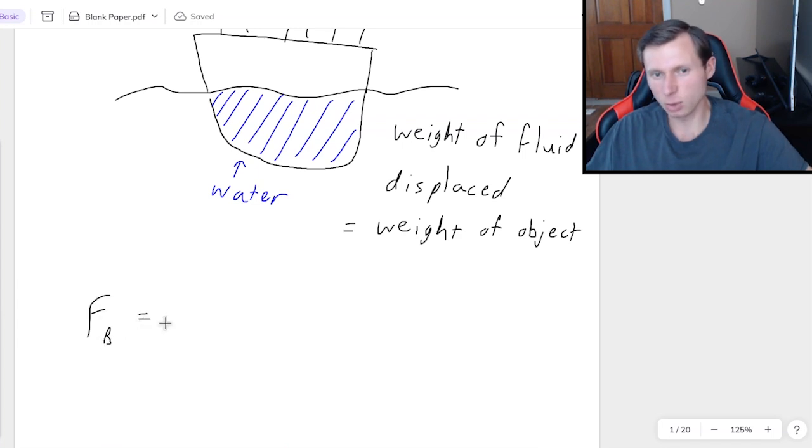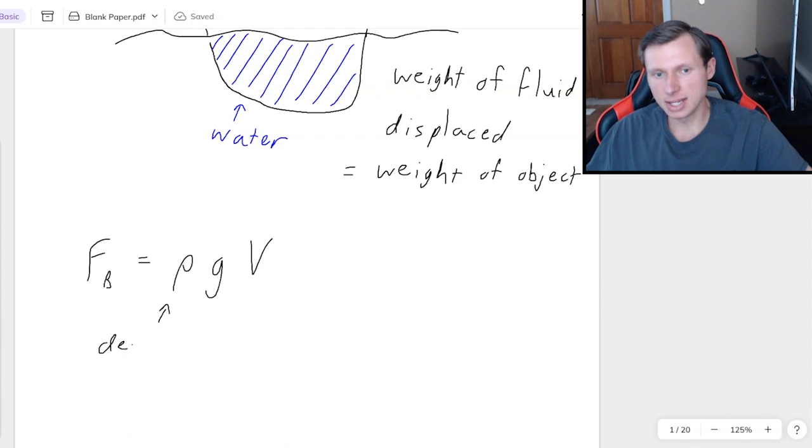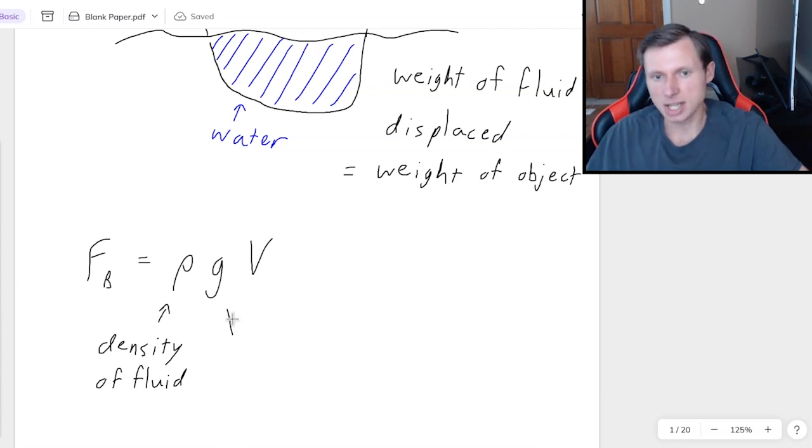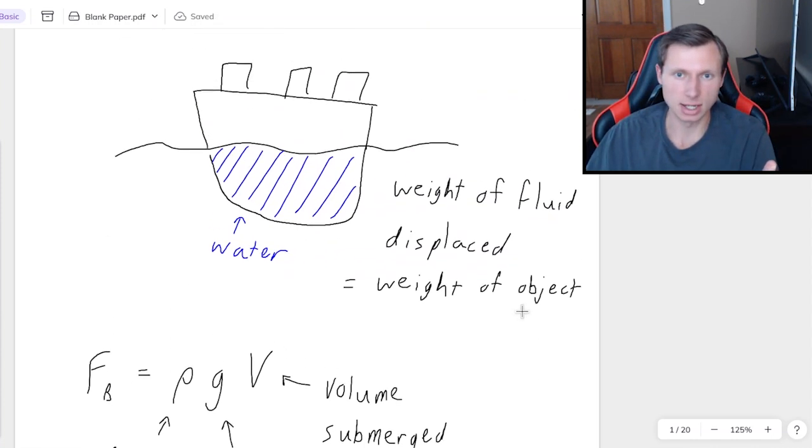we first need to know the buoyant force equation which is going to be rho g v. That is not a p or a curly p, it is greek letter rho and that is the density of the fluid you're in, not the density of the cruise ship, the density of the fluid. g is obviously the acceleration of gravity 9.8 as always, or if you're on a different planet I guess it could get very interesting. And then v is the volume, but specifically the submerged volume. In other words, not the volume of the whole cruise ship, only the volume that is underwater.